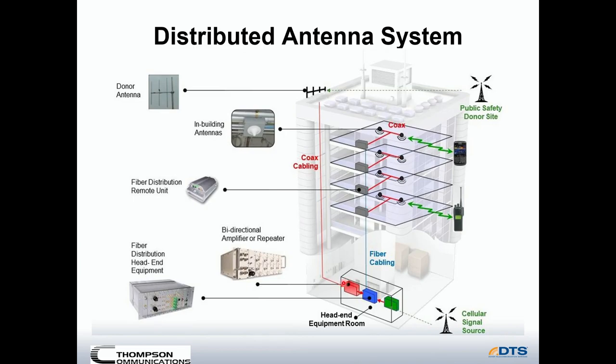Once the signal comes out of the repeater, it's changed into just data and goes into a fiber distribution unit. Once the signal is changed to data, it travels through the fiber network to fiber distribution units on the various floors, where it's converted back to an RF signal and then sent to an antenna or antennas on the various floors.